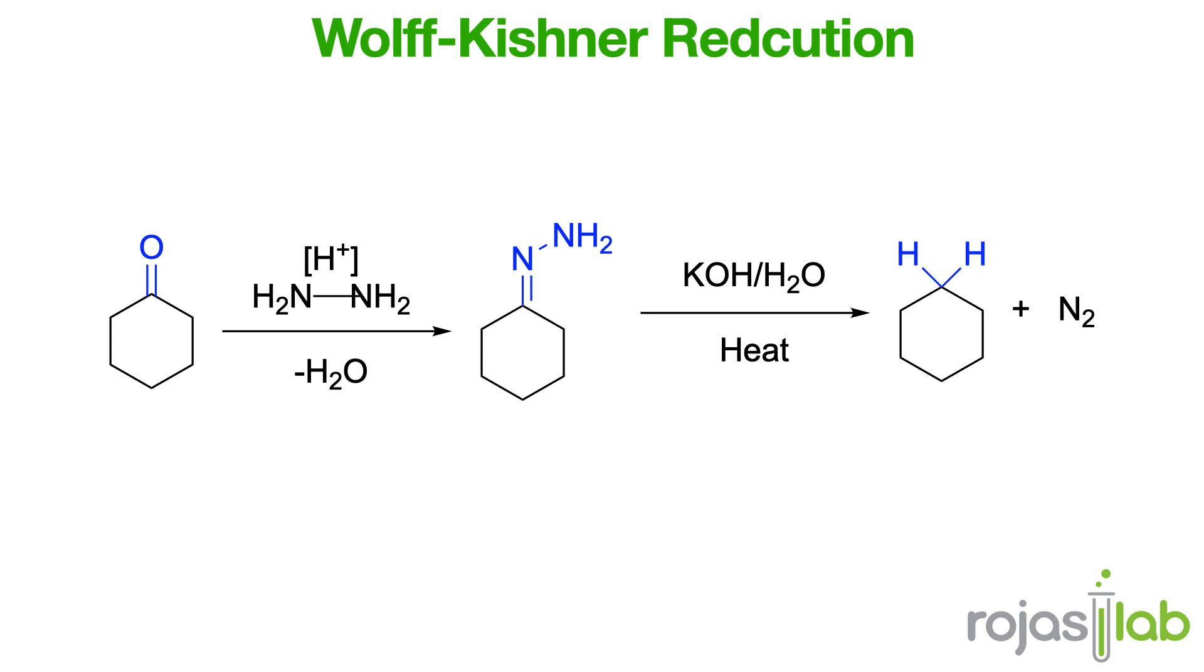This reduction proceeds in two distinct steps. First, the carbonyl compound undergoes condensation with hydrazine to form a hydrazone intermediate. Next, under high temperatures and the presence of a strong base, the hydrazone is transformed into the desired alkane through a series of elimination steps.